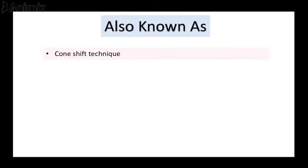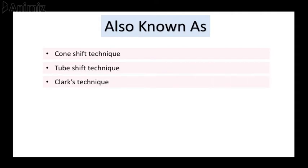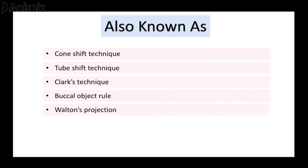The technique used to localize the object is the SLOB technique, also known as the cone shift technique, tube shift technique, Clark's technique, buccal object rule, and Walton's projection.